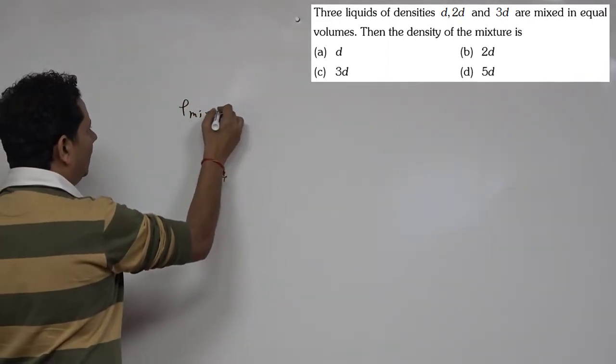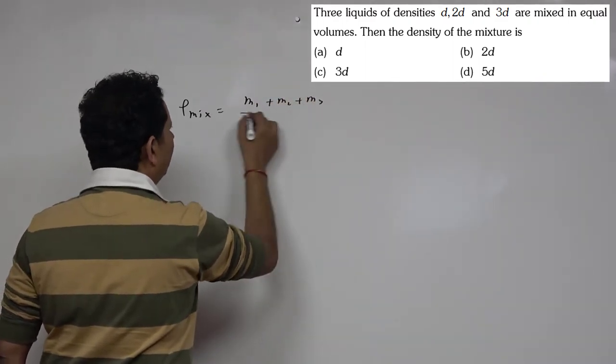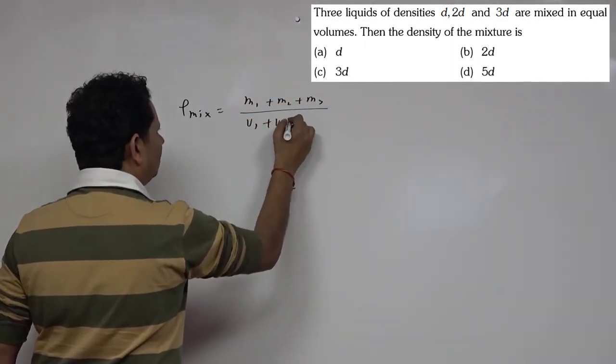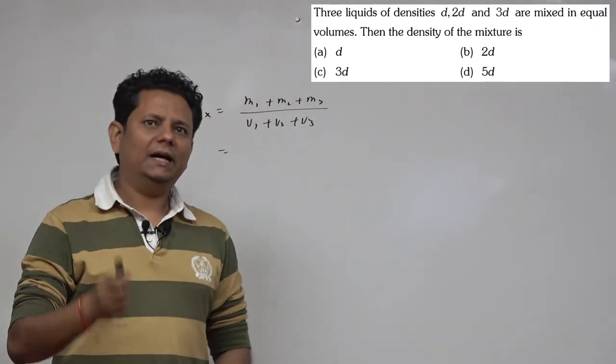So here we can write ρ_mixture will be equal to m1 plus m2 plus m3 divided by v1 plus v2 plus v3. So density is mass divided by volume.